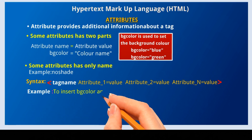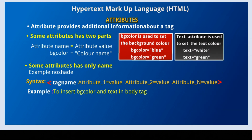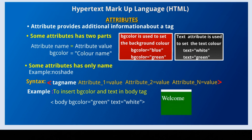Here we are using the body tag with two attributes: bgcolor and text. Already we have studied that bgcolor is used to set the background color. In order to set the text color we use the attribute text. First, insert less than symbol, then write tag name 'body', leave a space and write the first attribute, again leave a space, then write the second attribute. Finally insert the greater than symbol. The attributes bgcolor and text give additional information to the tag body — that is, we are getting green background color and white text color.